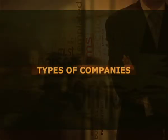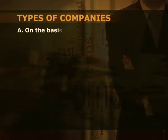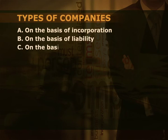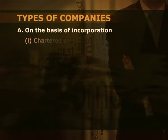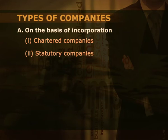Now let us discuss about types of companies. There are various types of companies. They are classified on the basis of incorporation, on the basis of liability, on the basis of members, on the basis of domicile, and miscellaneous or others. On the basis of incorporation, the companies can be classified as: first, chartered companies; second, statutory companies; third, registered companies.